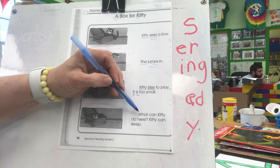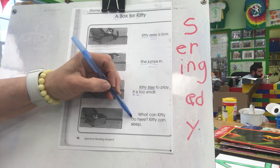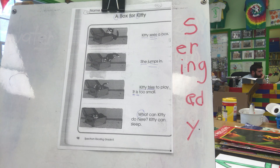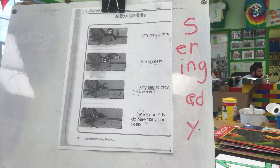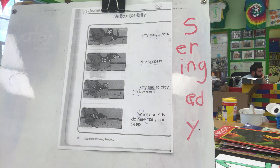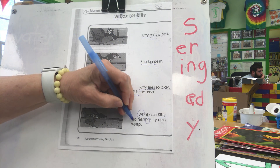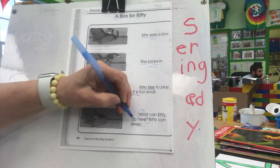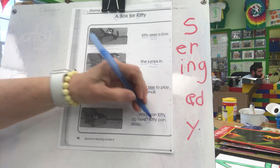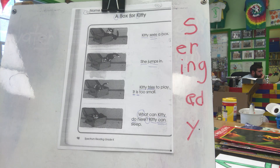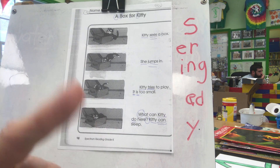Look at the last picture. What can Kitty do here? W-H — that's our question word, and there's the question mark. Question marks need a question word or they can't work. It's about Kitty and what Kitty is doing is the verb. Get your magic pointer. We're ready to slide, glide, and read.